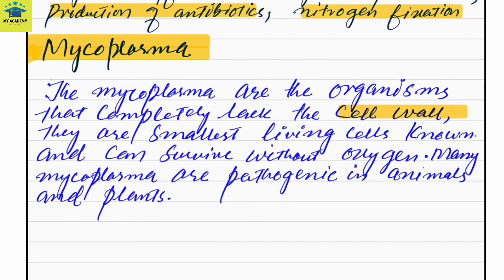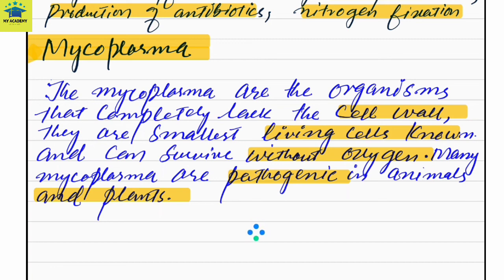Finally, we have mycoplasma. Mycoplasma are organisms that completely lack a cell wall. They are the smallest living cells known. They can survive without oxygen. Many mycoplasma are pathogenic — they cause disease in both animals and plants. This was all about Kingdom Monera. We shall discuss the other kingdoms one by one in upcoming lectures.